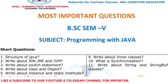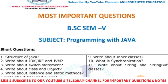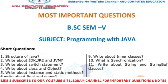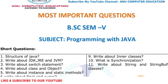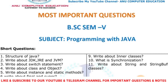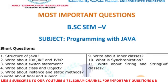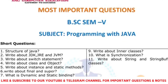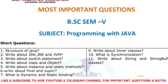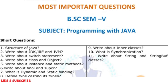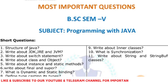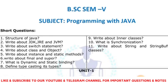Write about instance and static variables — instance methods are called with the object and static methods are called with the class name. Write about final, which is used for constants in Java, and super, which is used to call the base class constructor. Also cover dynamic and static binding, type casting and its types, inner classes, synchronization, and String and StringBuffer.